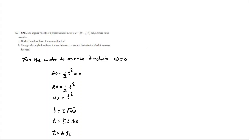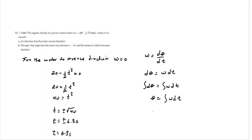We know the relation between angle and angular velocity: omega equals dθ/dt, so if we solve for θ, we get dθ equals omega dt. Applying the integral, θ equals the integral of omega dt. So we evaluate the integral of the function from 0 to 6.3 seconds — that is, the integral from 0 to 6.3 of (20 minus one-half t squared) dt.